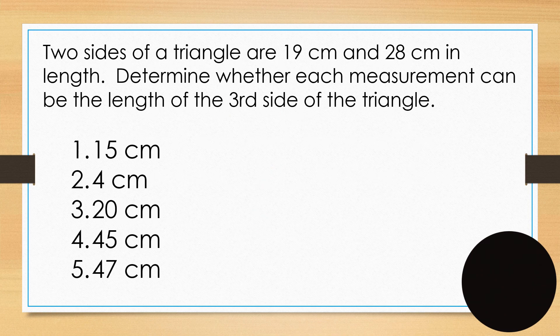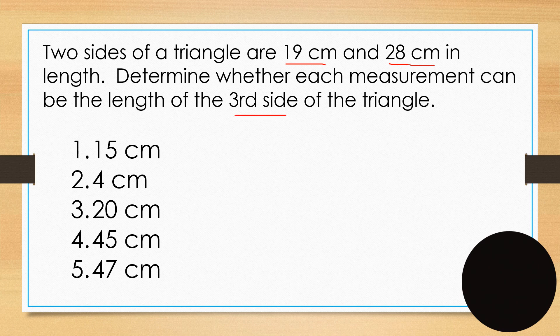This means two sides of a triangle are 19 and 28. So determine whether each of the measurements can be the length of the third side of the triangle. For 19 and 28, 15 cm. Possible. Yes. 4 cm. No. It's too short. 20 cm. Yes. 45 cm. No. It's too long. And of course, 47 is too long.